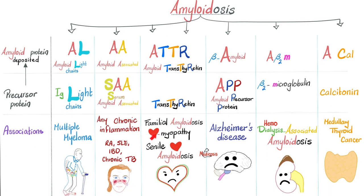If it is heart disease — cardiomyopathy or senile cardiac amyloidosis — then the protein deposited is the amyloid transthyretin protein. The precursor is transthyretin. In Alzheimer's disease, the most common cause of dementia in older patients, the protein deposit is beta-amyloid. The precursor is amyloid precursor protein, or APP. If I have kidney failure and I am on hemodialysis, I can get hemodialysis-associated amyloidosis — the protein deposited is A-beta-2-microglobulin. If I have medullary thyroid cancer, the protein deposit is amyloid calcitonin protein, and the precursor is calcitonin.